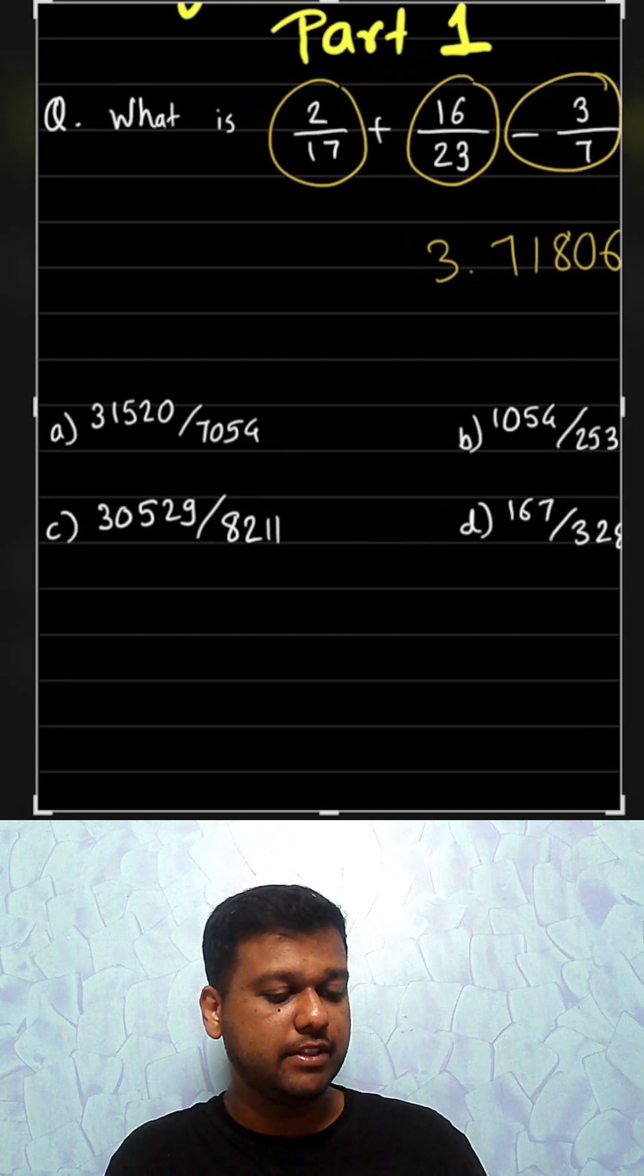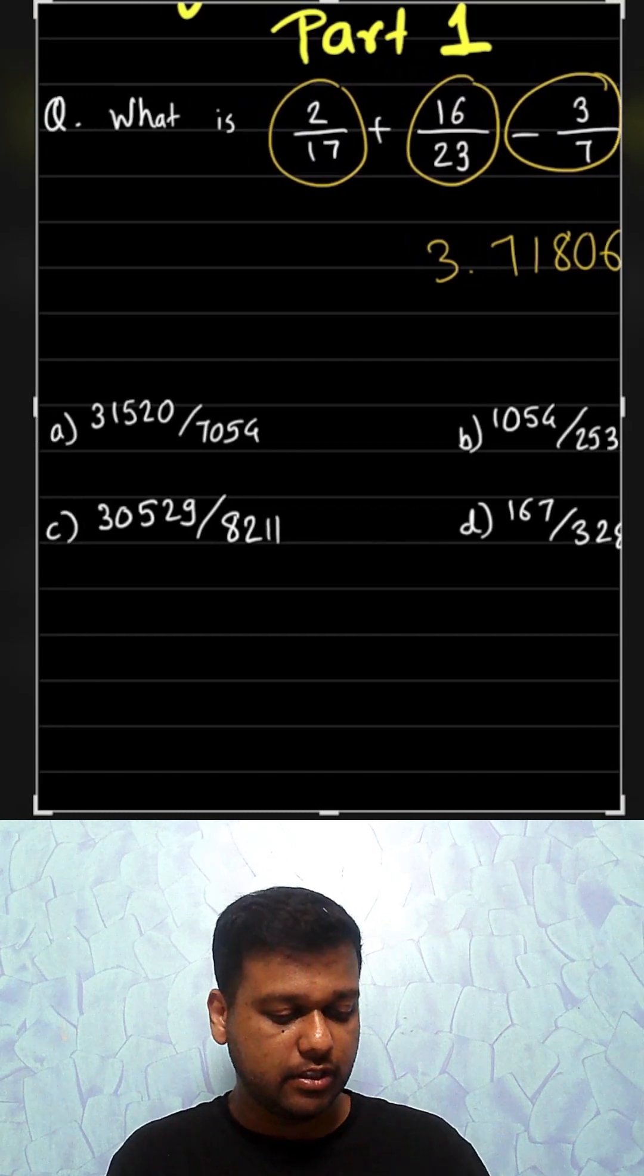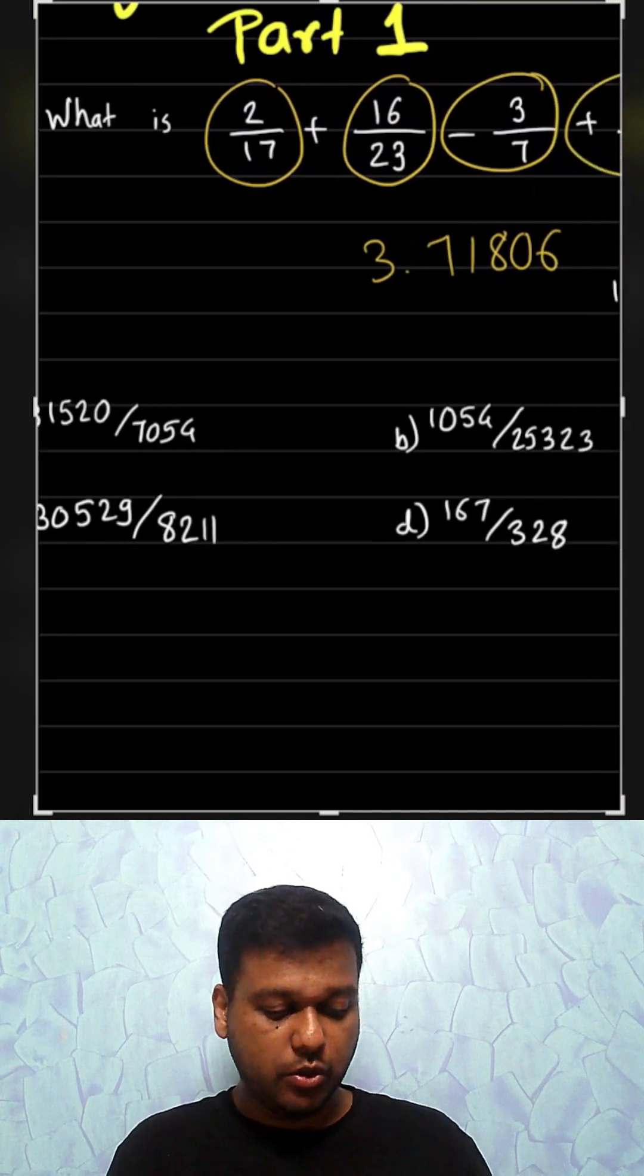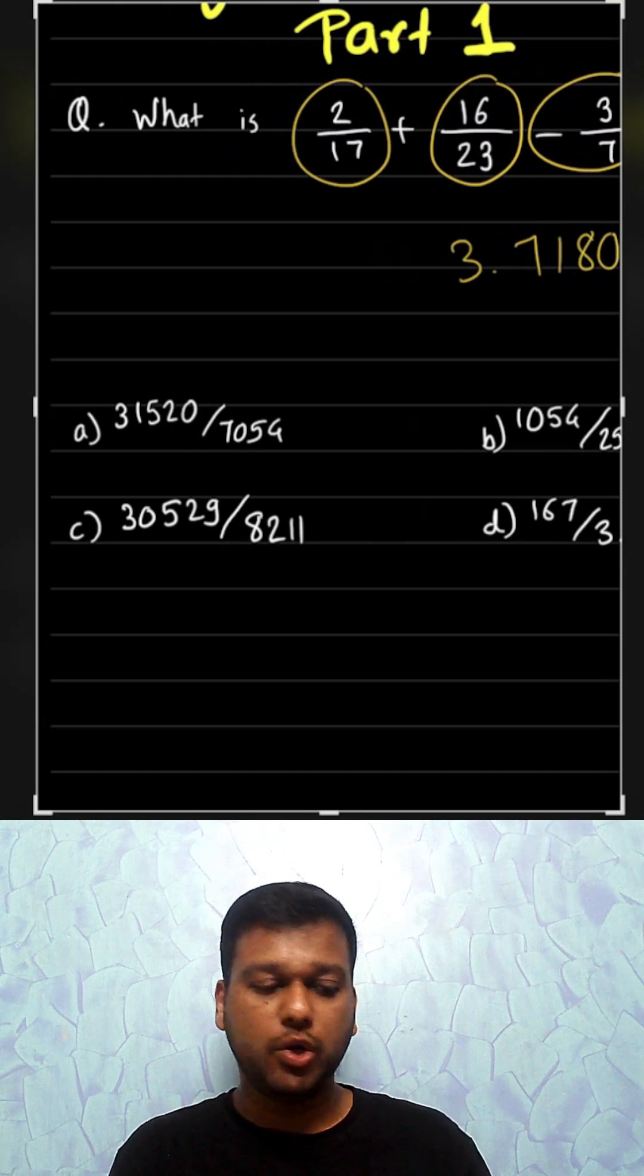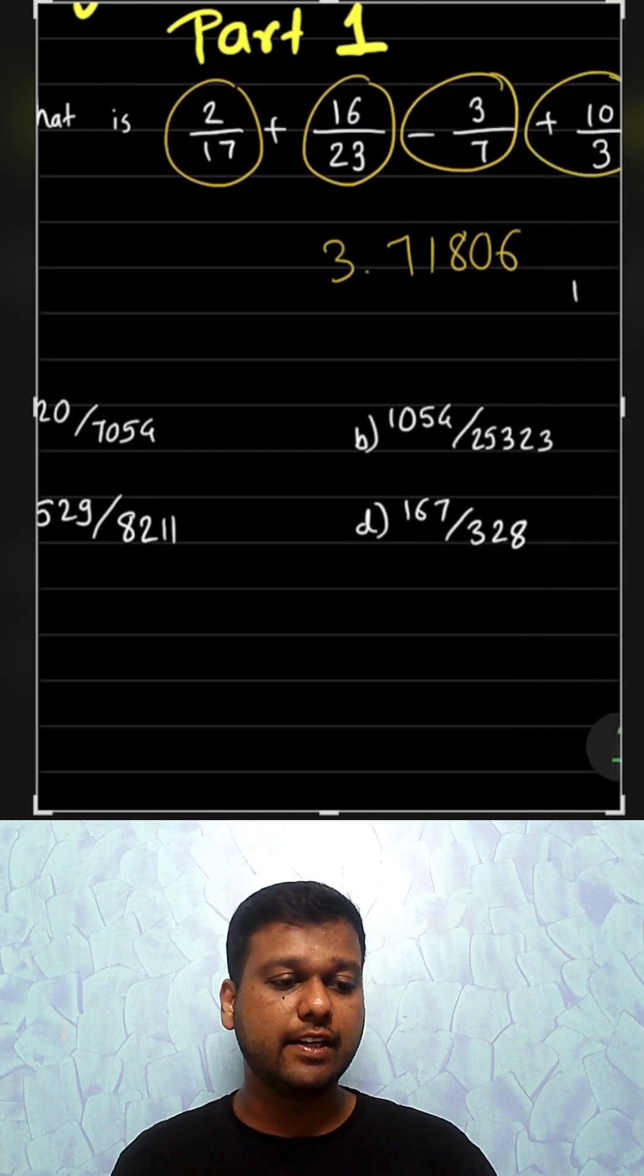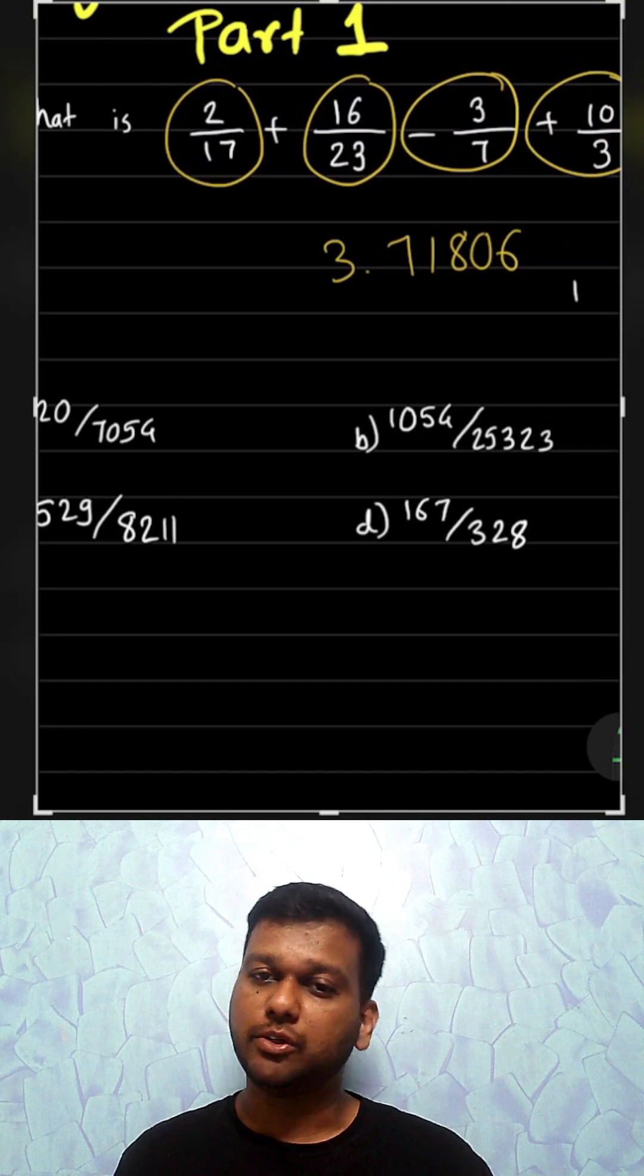Option A is 31520 upon 7054 which is not this. 1054 upon 25323 not this. 30529 divided by 8211. That gives us exactly this. 3.71806. That is the answer.